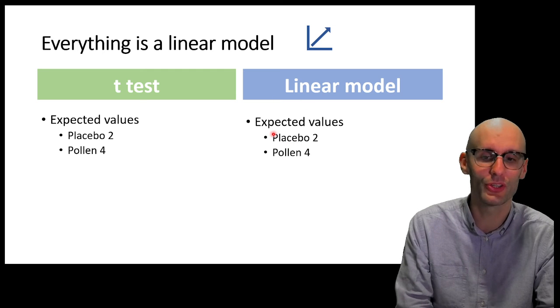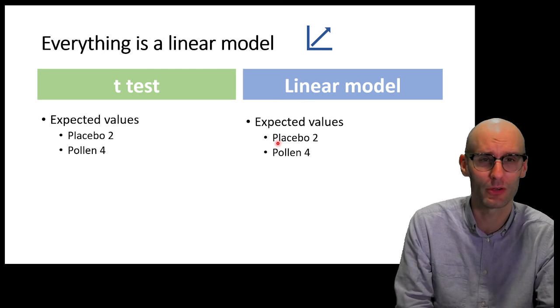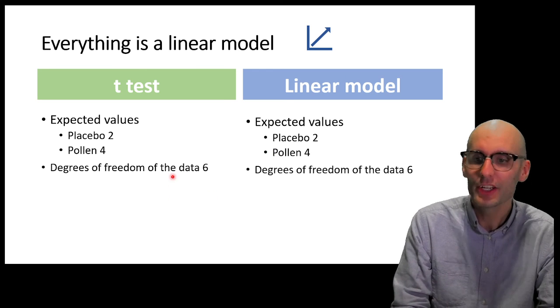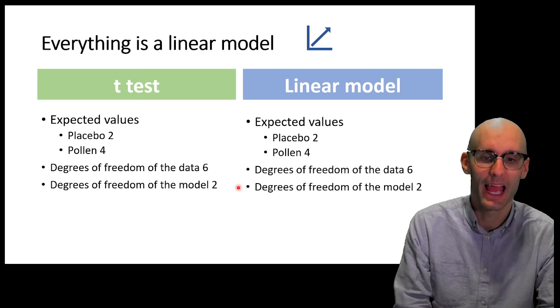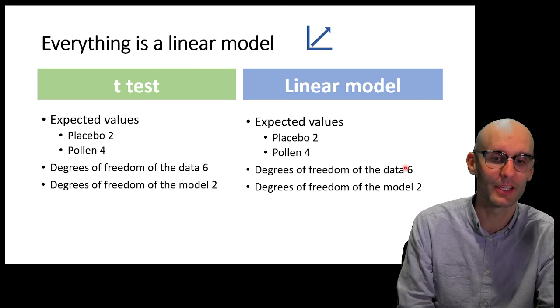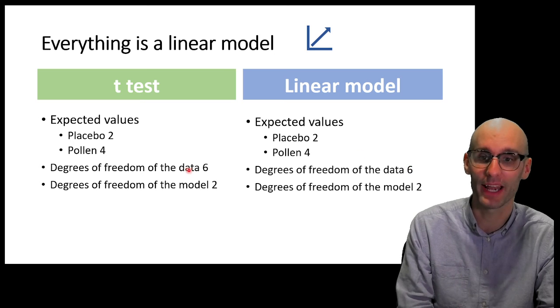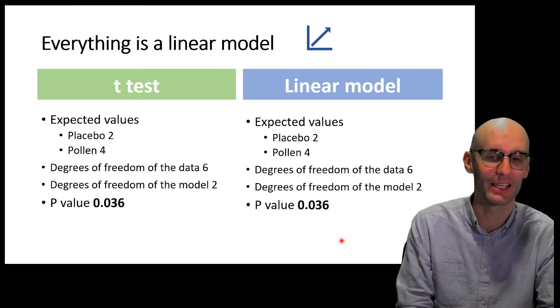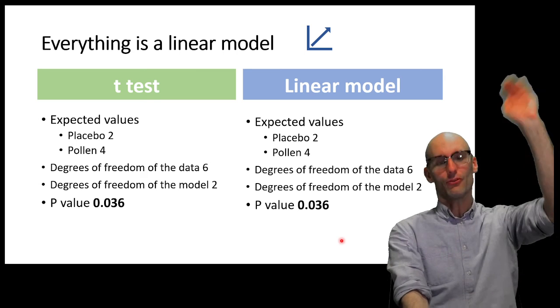And remember, all we had to do to do that was give the placebo the numerical value of 0, and the pollen the numerical value of 1. Degrees of freedom of the data was 6 in both groups. Degrees of freedom of the model was 2. So that's the degrees of freedom of the data after we've run our stats models of the linear model and the T-test. And the p-values were identical. I rest my case.